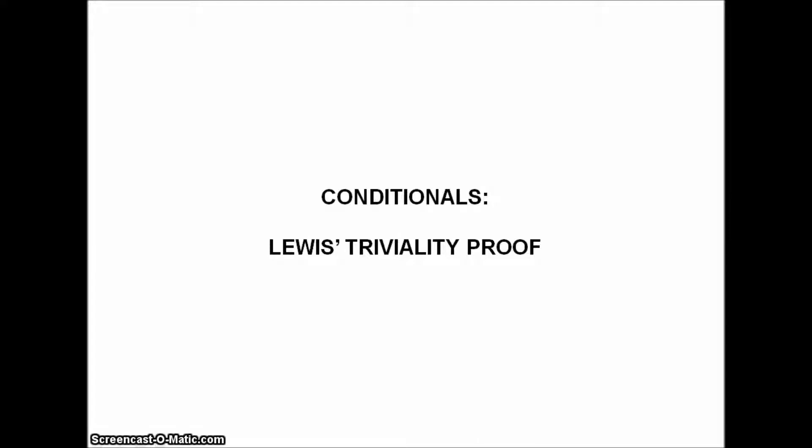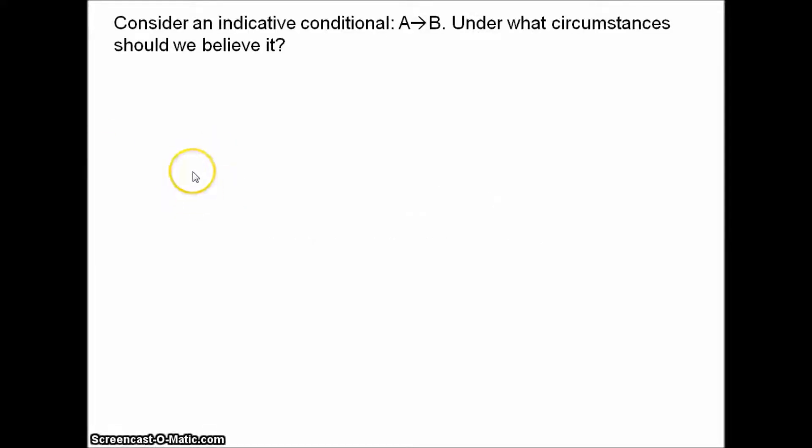Lewis's triviality results are generally taken as an attack on a famous thesis about indicative conditionals called Stalnaker's Hypothesis. But before we get to that, we need some background. Take an indicative conditional — if A then B. Under what circumstances should we believe it, just in general?